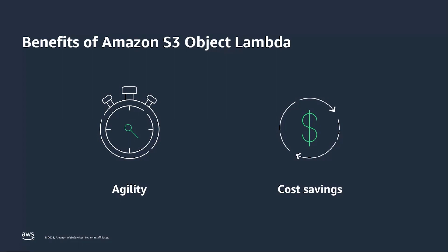It's a completely managed solution. There is no infrastructure to set up. There are no extra copies of objects that need to be stored. As a customer, you can simply author a Lambda function, and with your custom code and Object Lambda, the functions are automatically invoked when you request objects from S3, processing the objects before returning them to you, adding agility to the process. With S3 Object Lambda, you can save on storage costs by easily presenting multiple views of your data for different applications without having to run complex software or infrastructure or saving multiple copies of data for different views.